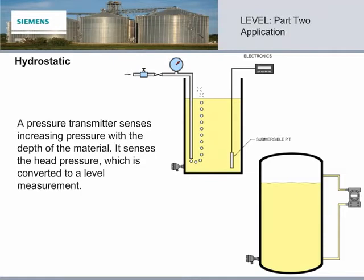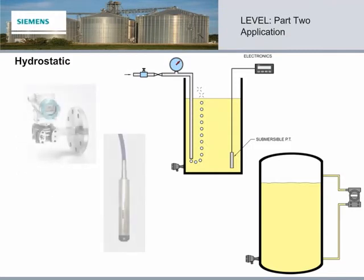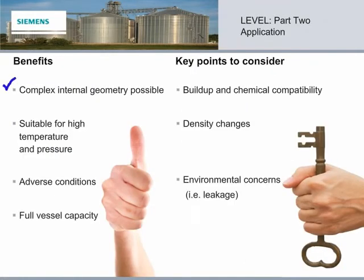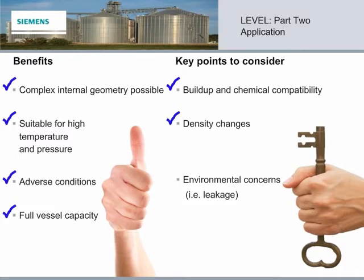Hydrostatic level measurement uses a pressure transmitter to sense increasing or decreasing pressure as the depth of the material changes. It senses the weight of everything above the sensor, also referred to as head pressure. This information is then converted to a level measurement. Hydrostatic level measurement is great for complex vessels, as the internal shape or contents do not matter. It is also suitable for high temperature and pressure, and for adverse conditions such as foam, vapor and turbulence. With hydrostatic level, you can fill your vessel to the brim, as there is no device inside. But while it does not actually touch the contents, it is still a contacting technology, so check for buildup, and chemical compatibility needs to be factored in for diaphragm selection. Also look for density variances that can affect level readings, and be aware of the environmental impact of potential leakage.